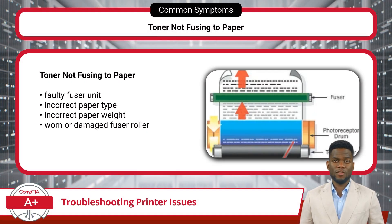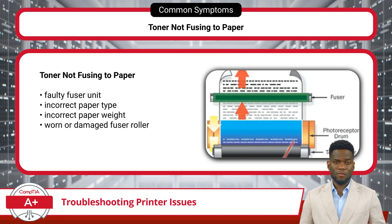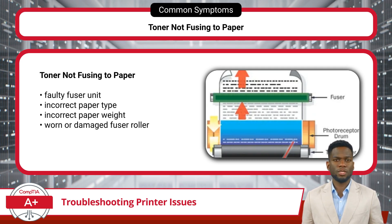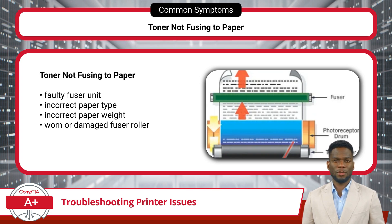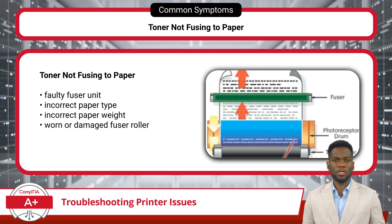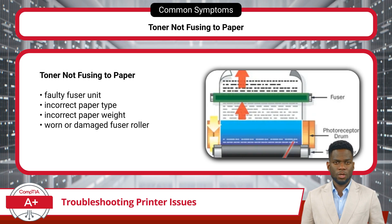The next issue is specific to laser printers. When toner fails to fuse properly to the paper, it can lead to smudging or smearing and poor print quality. A faulty fuser unit — responsible for heating and pressing the toner onto the paper — may be to blame. Using an incorrect paper type or weight can affect toner adhesion, and adjusting printer settings or fuser temperature may help. Worn or damaged fuser rollers can also hinder proper toner fusion.